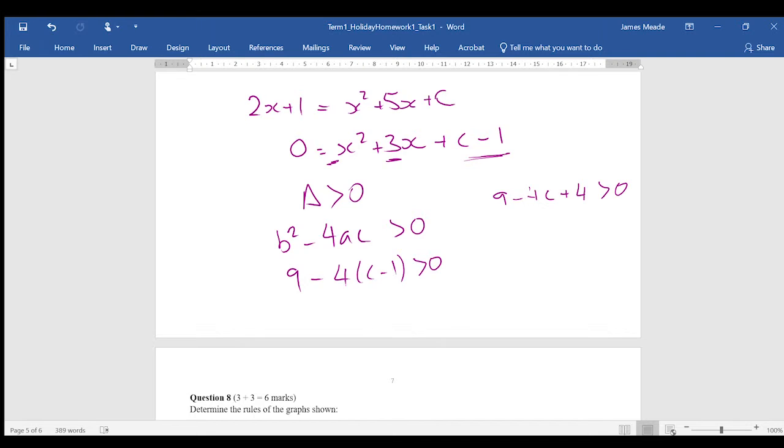which 9 plus 4 is 13 minus 4c is greater than 0. So taking the 4c over to the other side would get 13 is greater than 4c, so c must be less than 13 on 4.